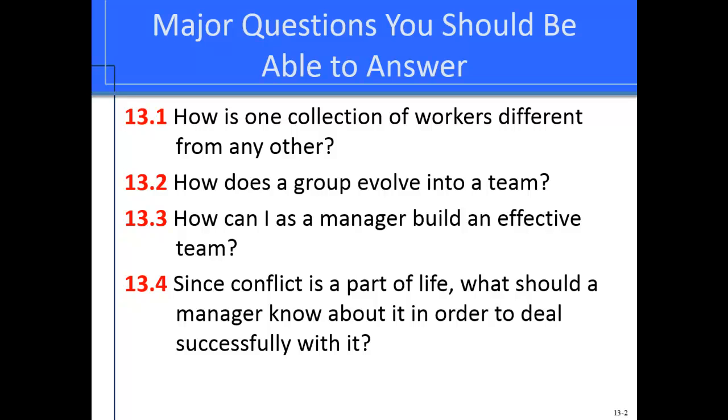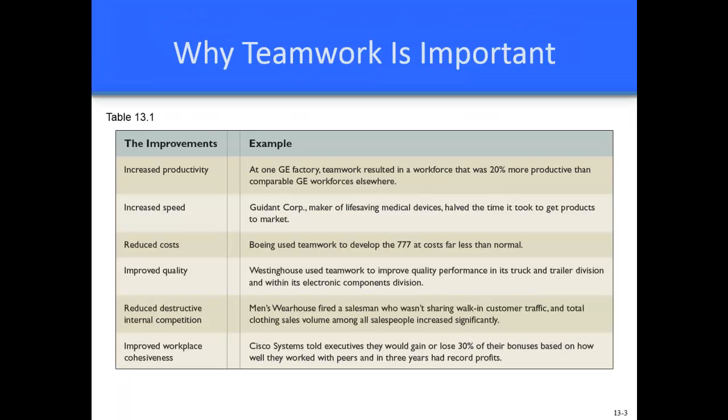Let's first talk about groups versus teams. Organizations are not only flatter and information-based, but also organized around teamwork. Teamwork is now the cornerstone of progressive management for a number of reasons. As you can see in table 13.1, some of those reasons include increased productivity, increased speed, reduced cost, improved quality, reduced destructive internal competition amongst workers, and improved workplace cohesiveness.